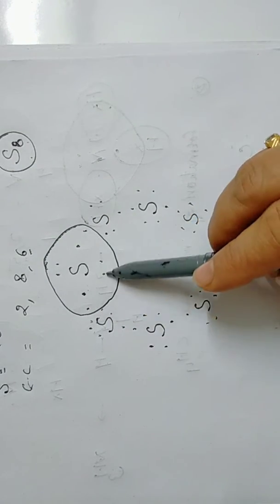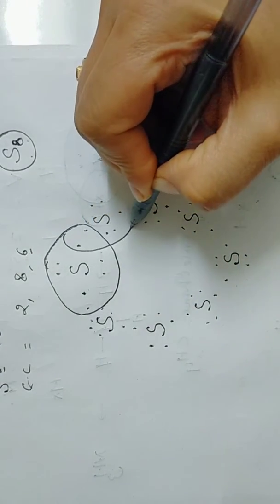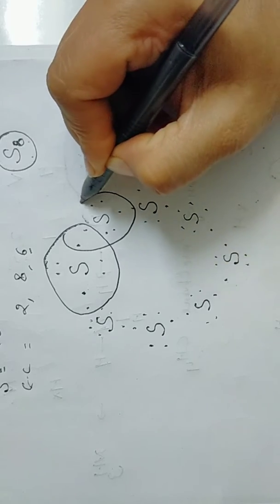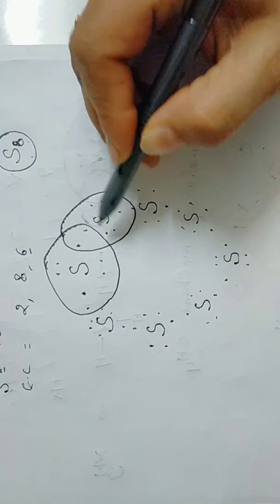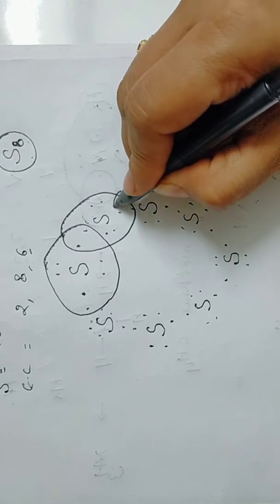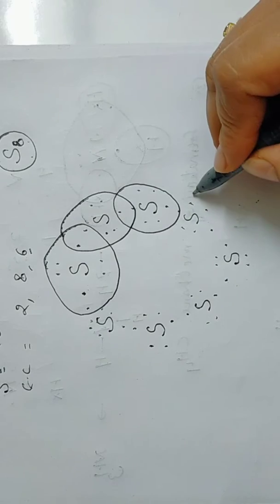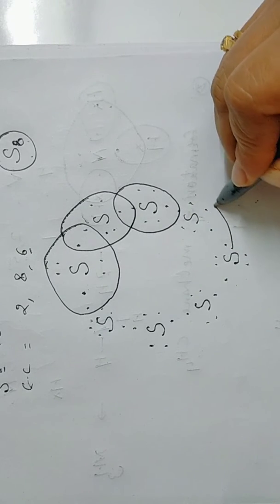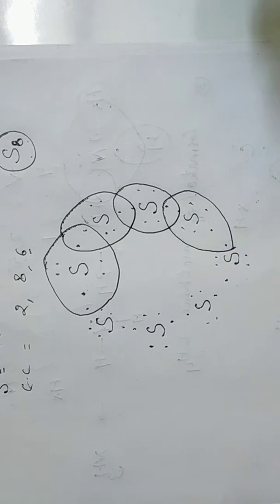Now come to this: two shared pairs. Count: one, two, three, four, five, six, seven, eight. This side and then next. Be very careful when you draw it.